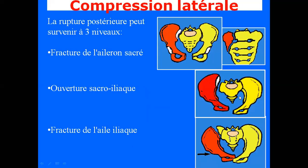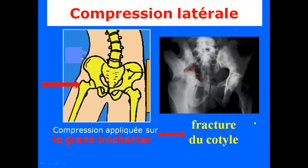En arrière, on a trois possibilités : une fracture au niveau de l'aileron sacré, une lésion au niveau de la sacro-iliaque, ou une atteinte de l'iliaque. On aura toujours la tendance au chevauchement des deux hémi-bassins. Si la compression latérale se fait sur le grand trochanter, la force va pousser la tête fémorale via le col du fémur, et c'est le cotyle qui va se fracturer — ce qui entrera dans le cadre du prochain cours.